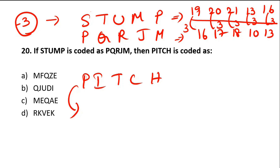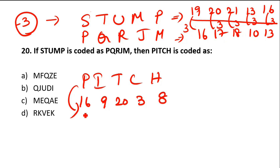Apply the same logic to PITCH. You can use numerical values or alphabetical order — anything is fine according to your convenience. P is 16, I is 9, T is 20, C is 3, H is 8. So 16 minus 3 is 13 — your answer should start with M. 9 minus 3 is 6 — 6 is F.